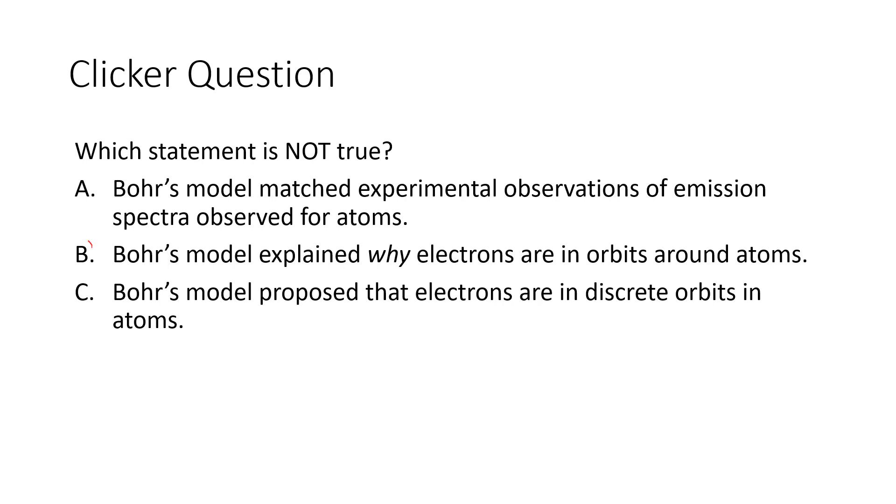The one of these that is not correct is answer B. Bohr could not explain why. According to physics, those electrons should spiral into the nucleus instead of being in stable circular orbits around the nucleus.